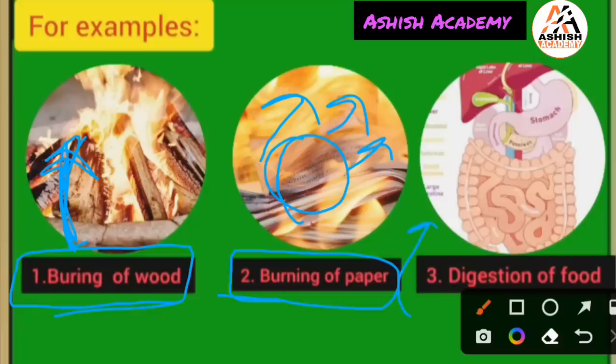Third example: digestion of food — bhojan ka pachna (food being digested). This is a chemical change. To recap: first was burning of wood, second was burning of paper, third is digestion of food. These are all examples of chemical change.